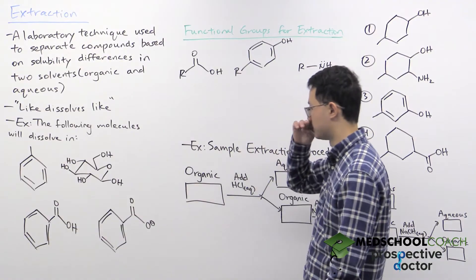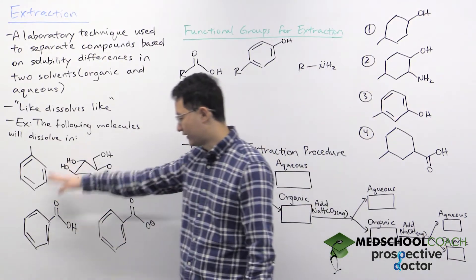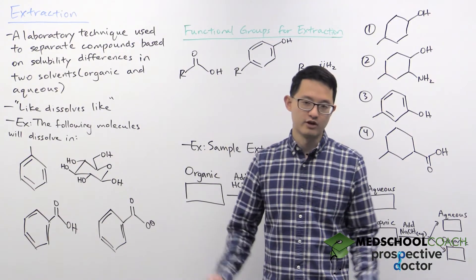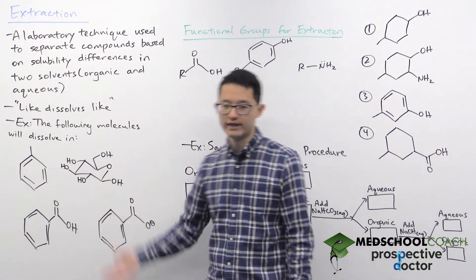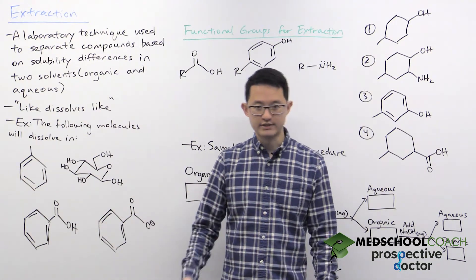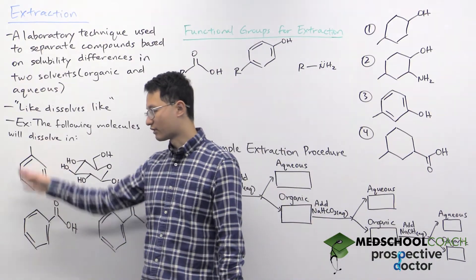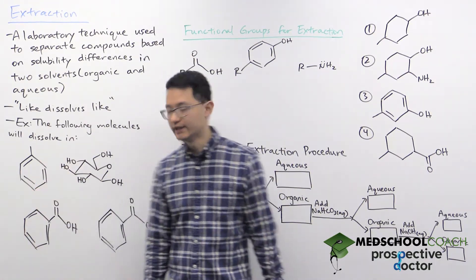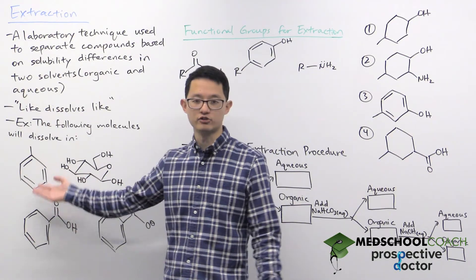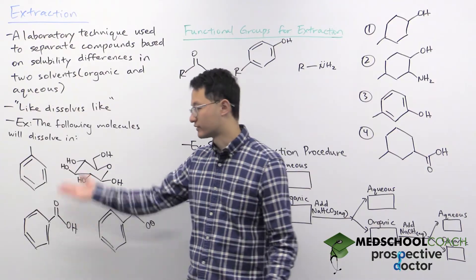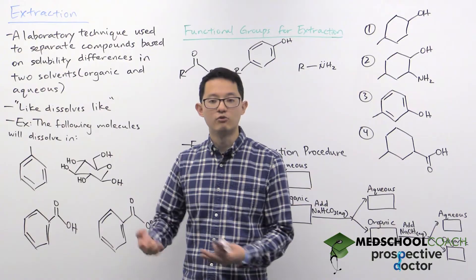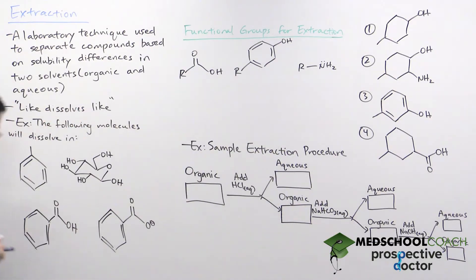Let's take a look at a few examples. We have four molecules and the question is: will each dissolve in an organic solvent or an aqueous solvent? The first molecule on the top left is toluene. This molecule is essentially completely nonpolar — it's a hydrocarbon with no polar parts. So a nonpolar molecule will want to go into a nonpolar organic solvent.